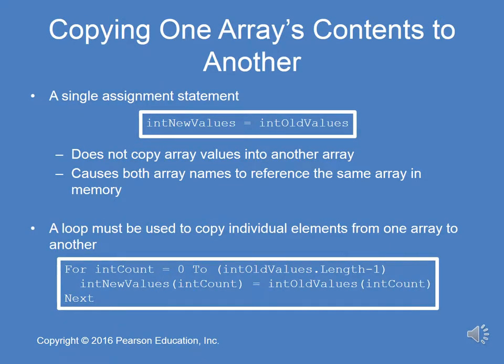Next, we're going to look at how to copy one array's contents to another. Here's a single assignment statement — let's assume int new values and int old values are two arrays. This will not copy array values from int old values into the comparable index locations in int new values. It simply causes both array names to reference the same array in memory, which is not what we want. You must use a loop to copy individual elements from one array to another. We use a for loop: for int count equals zero to int old values dot length minus one, then int new values(int count) equals int old values(int count).